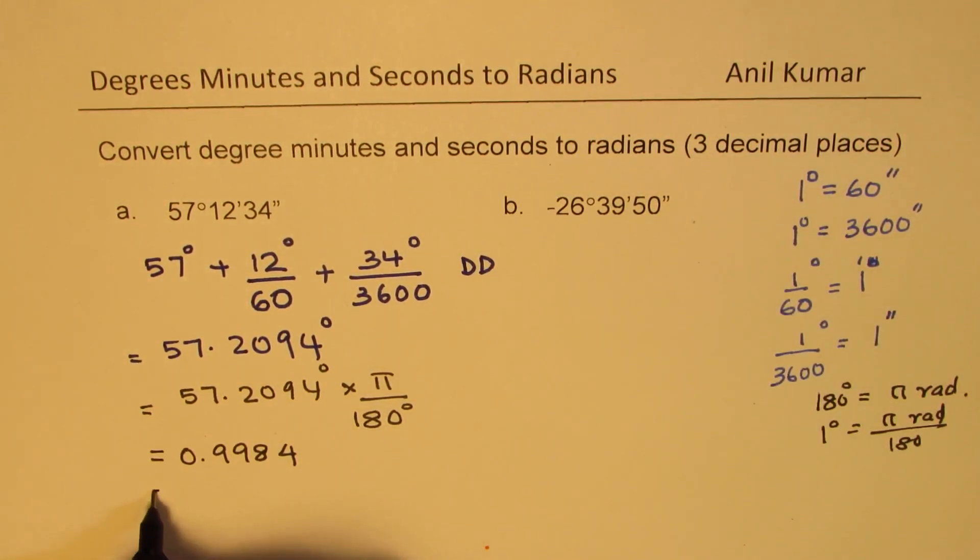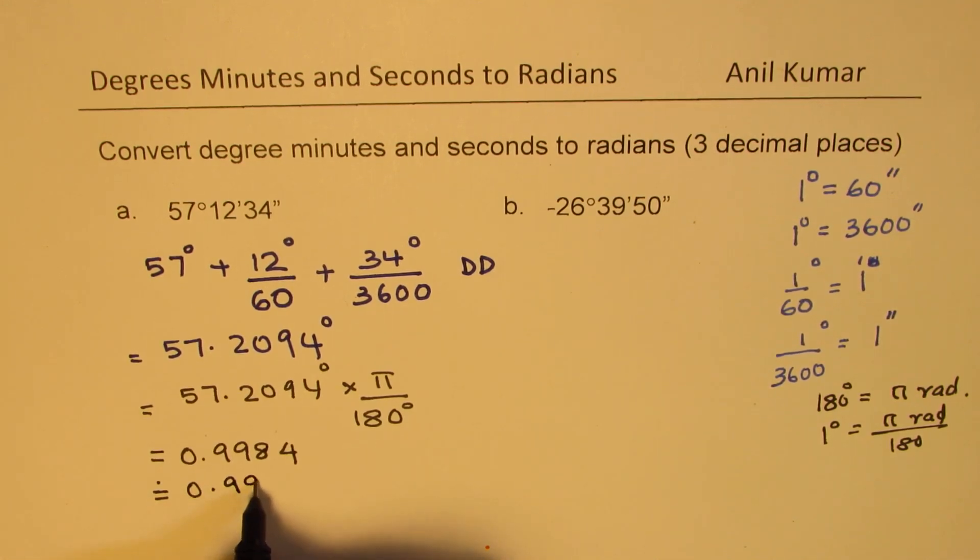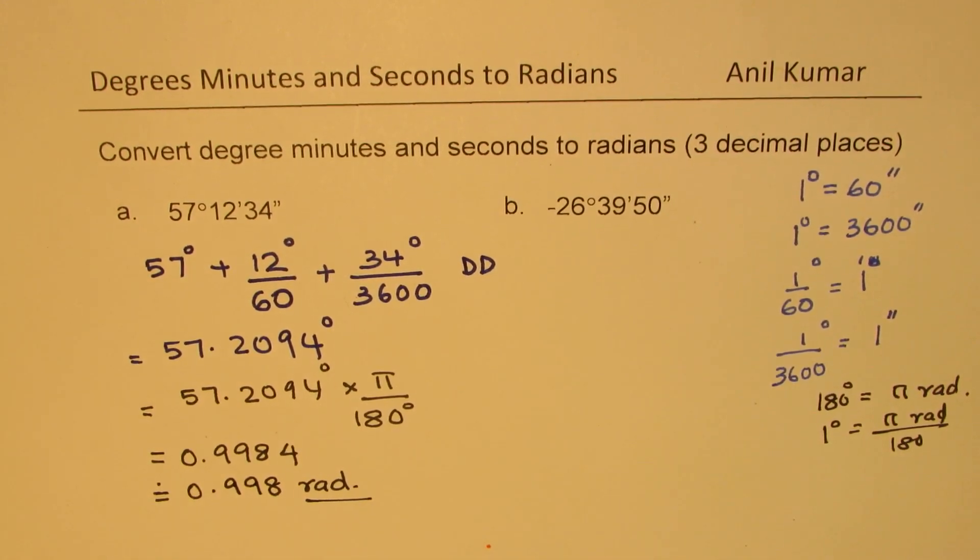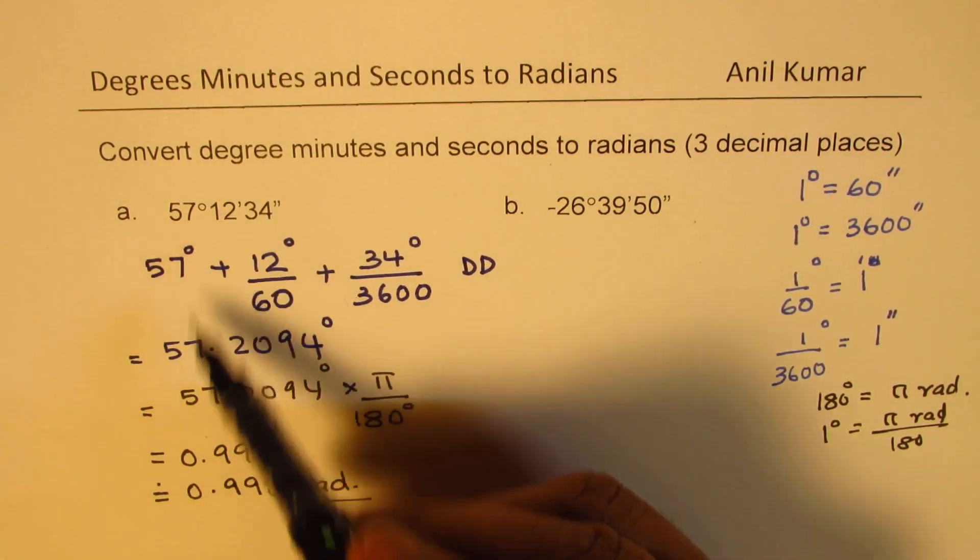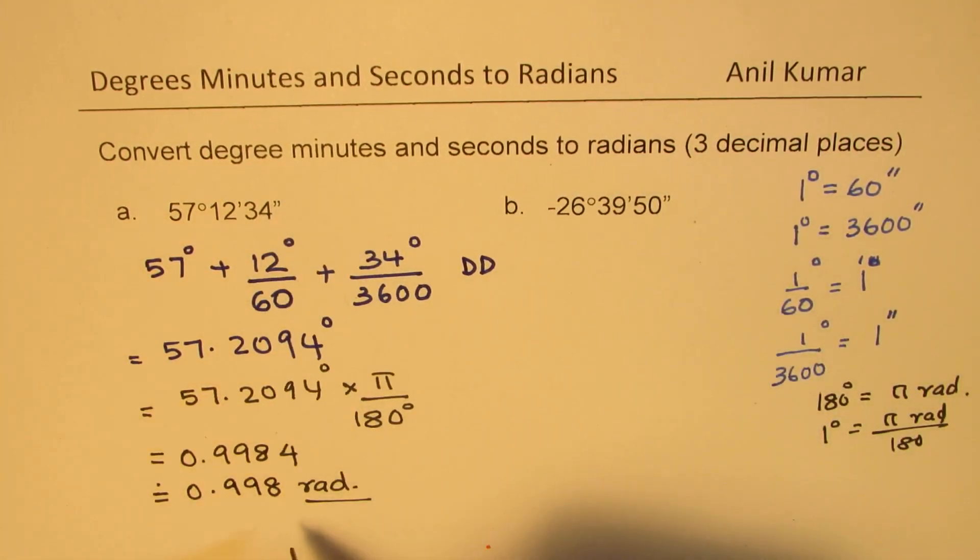So that many radians. Rounding to three decimal places, I could write this as 0.998 radians. So that is very close to one radian. 57.3 is one radian. So that is how you do the conversion.